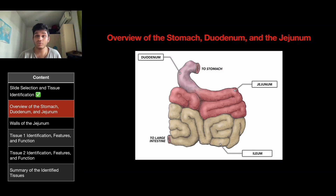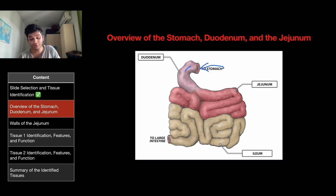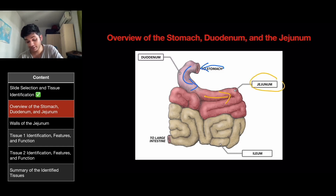Let's look at the overview of the stomach, duodenum, and the jejunum. As food enters from the stomach into the duodenum, it enters the jejunum, which is exactly here, and this is where I'll be examining the tissue slide from.